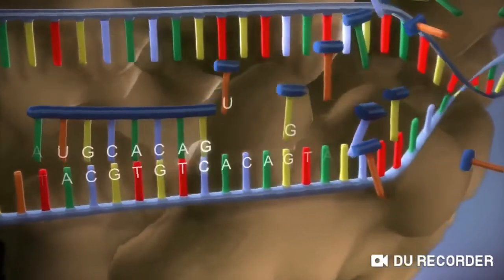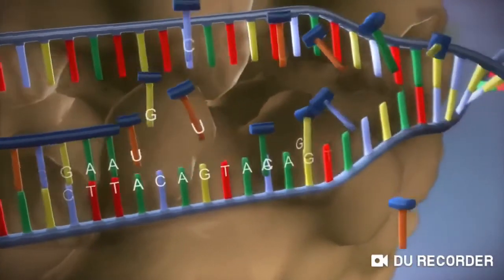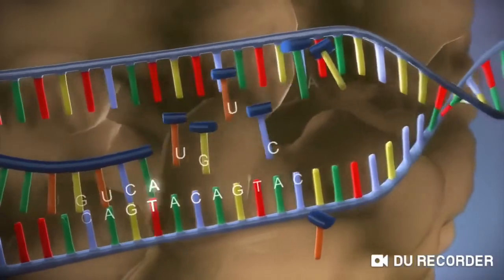The DNA code determines the order in which the free bases are added to the messenger RNA. This process is called transcription.